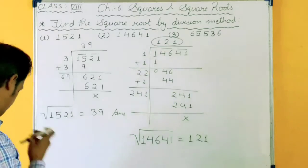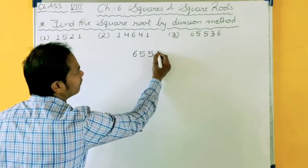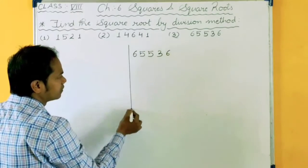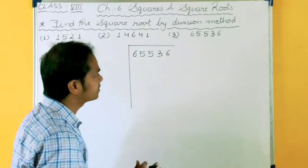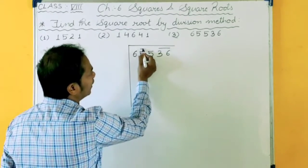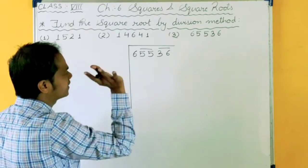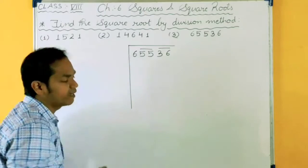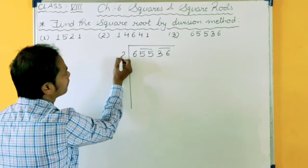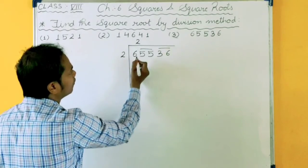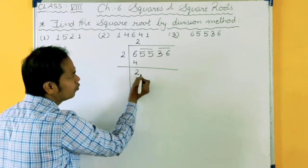Now third part I will explain you. Now take this, 6, 5, 5, 3, 6. What is the first step? Make pairs from the right hand side. 36 is one pair, 55 another pair, and then 6 as it is. So what I will take here? If I take 3, 3 times 3 is 9, which is greater than 6. So I will take 2. 2 times 2 is 4. 6 minus 4 is 2.